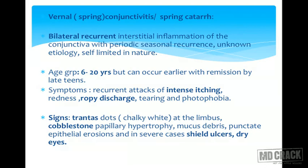The most important type of conjunctivitis in terms of incidence and examinations is vernal conjunctivitis, or spring catarrh. It is a bilateral, recurrent, interstitial inflammation of the conjunctiva with periodic seasonal recurrence. The etiology is idiopathic and the condition is self-limited, passing on its own. The age group is 6 to 20 years, remitting by the late teens. Itching is the hallmark symptom — it is the most important and characteristic symptom of vernal conjunctivitis.